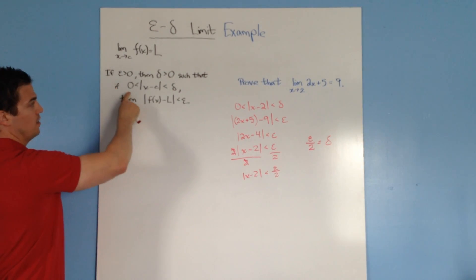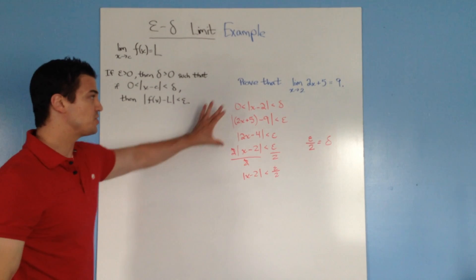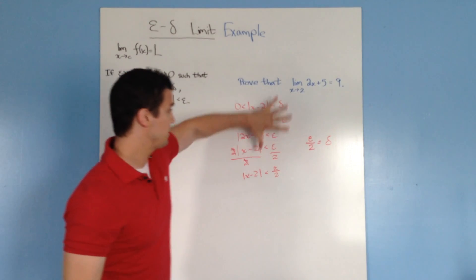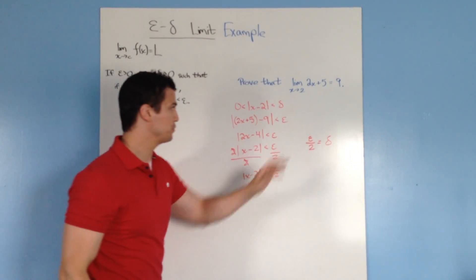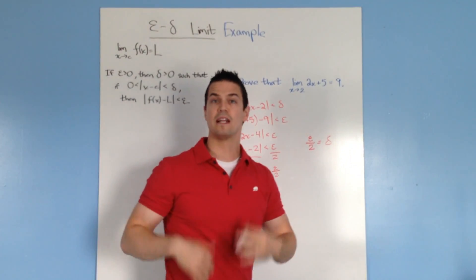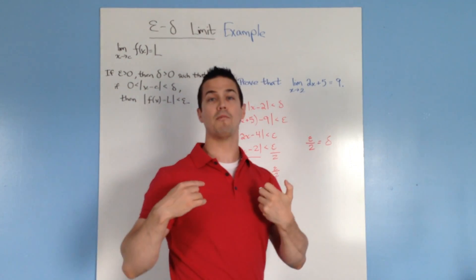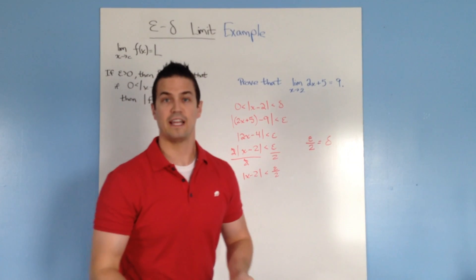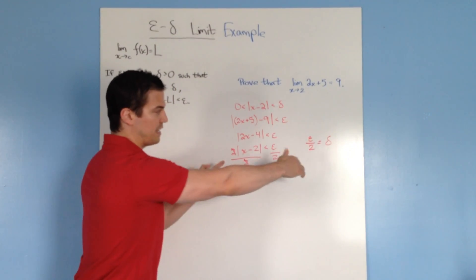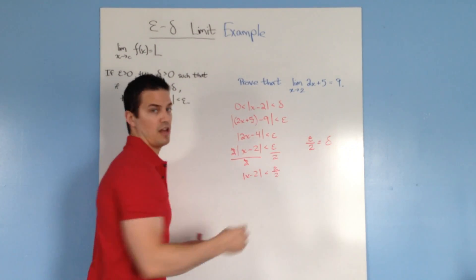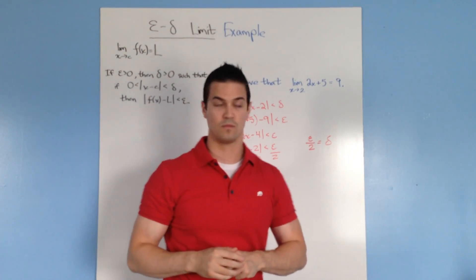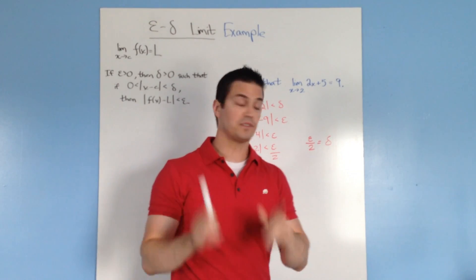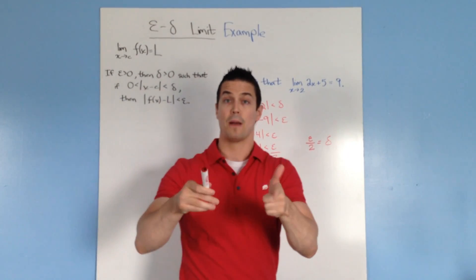Then we have our two inequalities. We started with those, so we worked this definition backwards to prove it. But this work will be enough to prove that this limit exists. Now, as a challenge, I want you to come up with a different limit that doesn't work. You'll see how this will not show the connection between epsilon and delta according to our definition. If you have any questions about this or any other problems, please let me know.